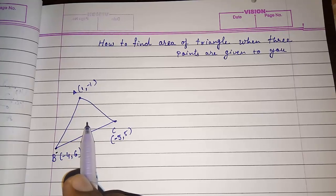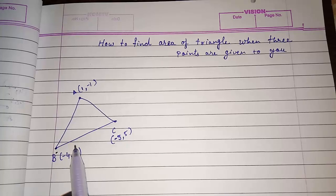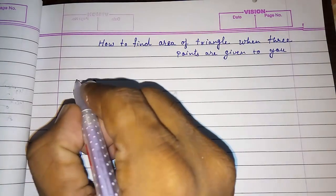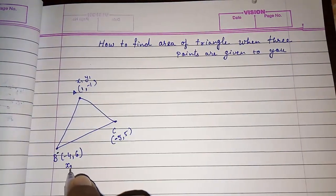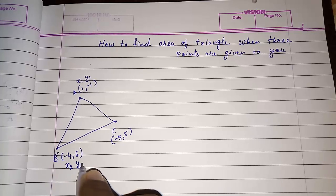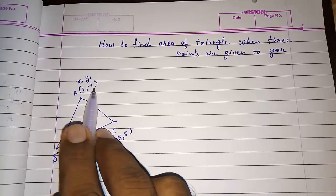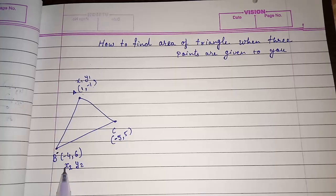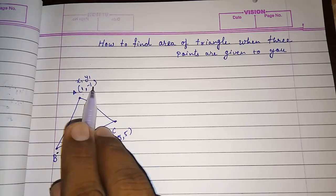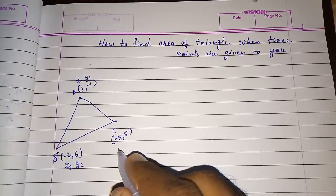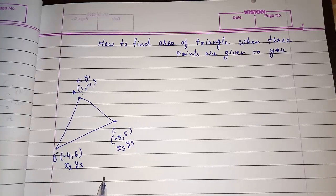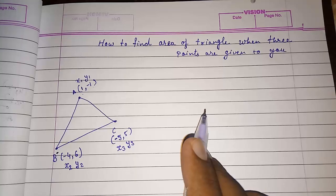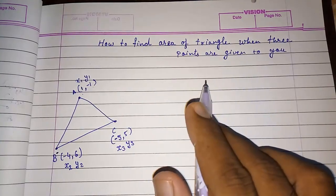If we want to find the area of this triangle, first we have to give names to these coordinates. We call the first coordinate x1, y1 — where x is the abscissa and y is the ordinate. The second coordinate is x2 and y2, and the third coordinate is x3 and y3.